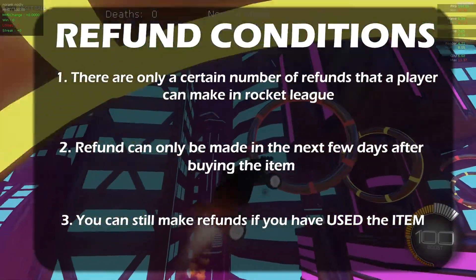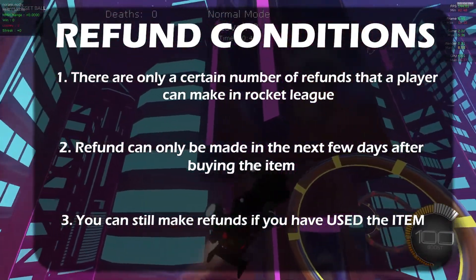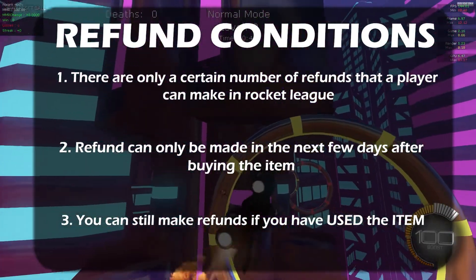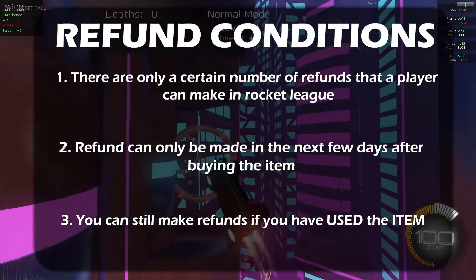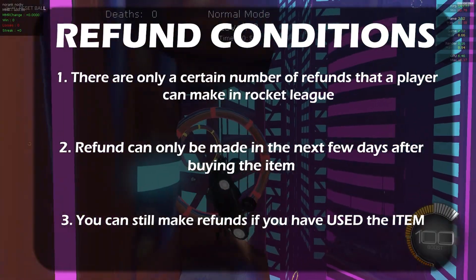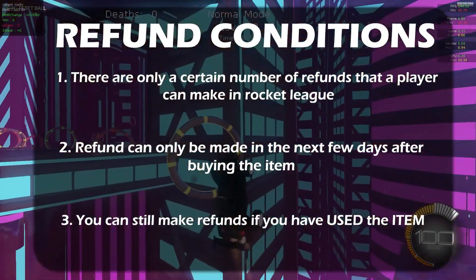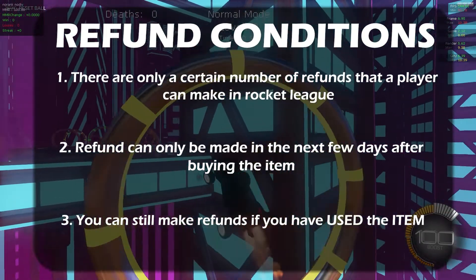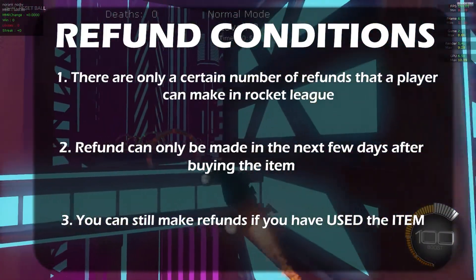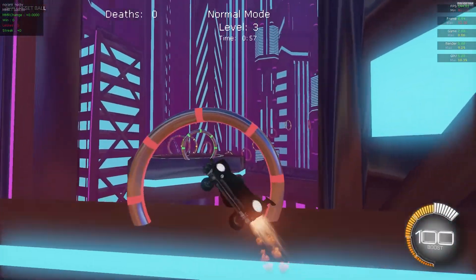The third condition is that even if you've used the item you want to refund, you will still be able to refund it. This is the purpose of the refund — if you've used the item and you're not satisfied with it, you will be able to refund that particular item.